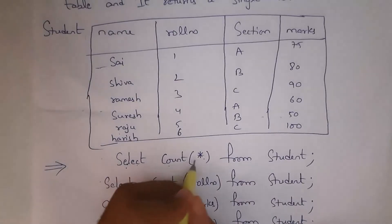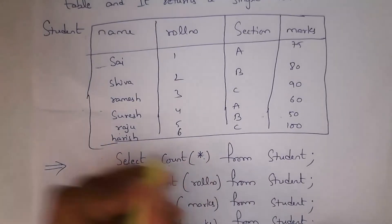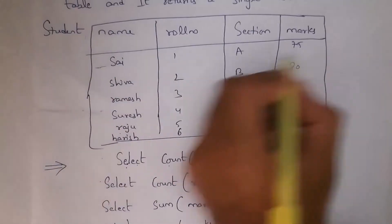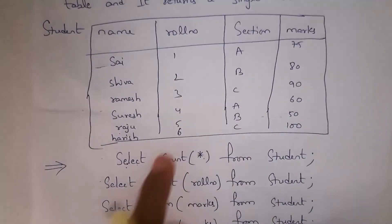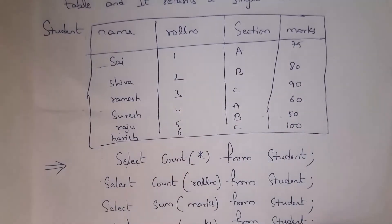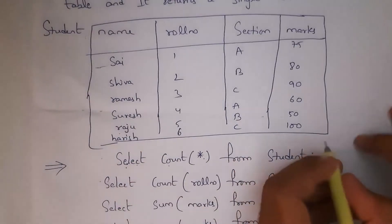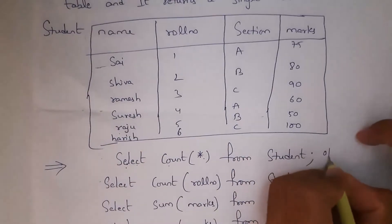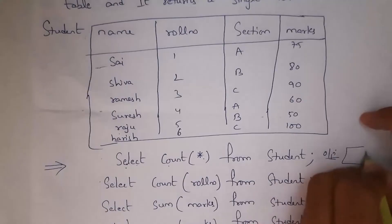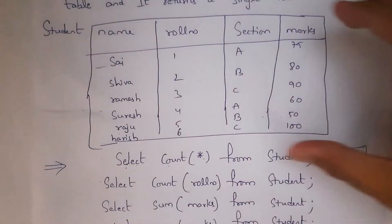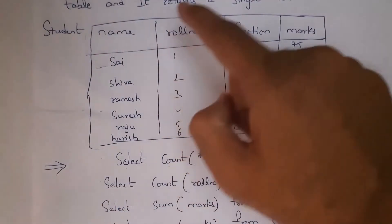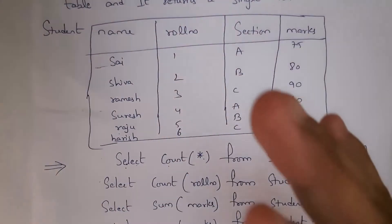it will count the number of rows present in all columns. In total there are six rows — 1, 2, 3, 4, 5, 6 — so when I run this code it will display the output: 6. Now, instead of selecting all columns, I want to select only the roll number column and count the rows in that column.